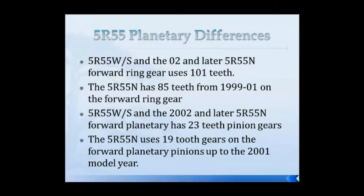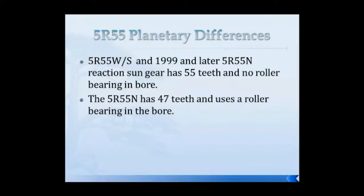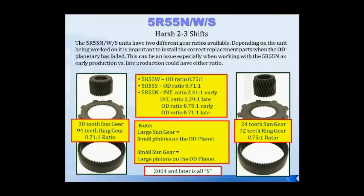You can get all sorts of weird issues by intermixing planetaries. The W and S have different ratios, and the Ws give us the biggest troubles with planetary failure. The most common hard shift we get from intermixing is a hard 2-3 shift. The ADAPT strategies are going to try to adapt themselves out of slippage issues, so the adapts are trying to remedy the ratio difference as it sees the clutch come on. In most instances, you're going to end up with ratio problems. You can end up with all sorts of issues by simply intermixing parts that were never designed to be intermixed.